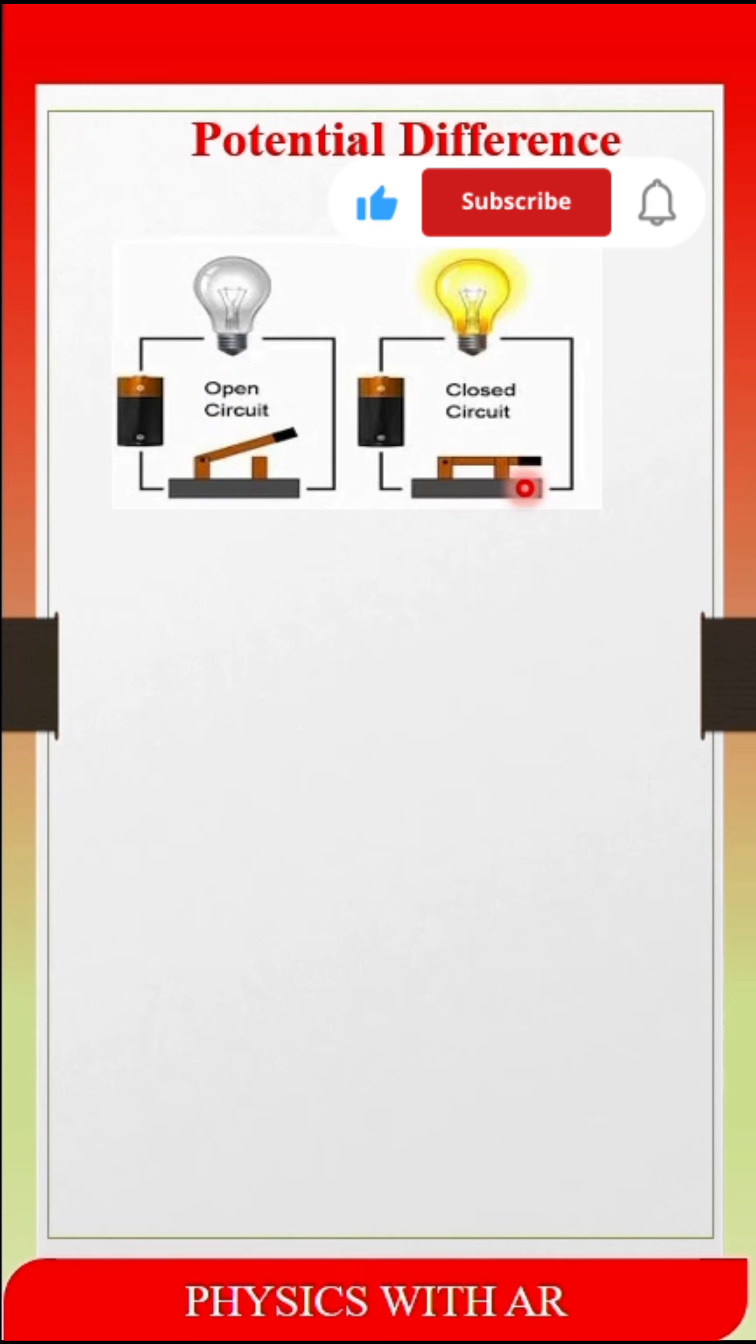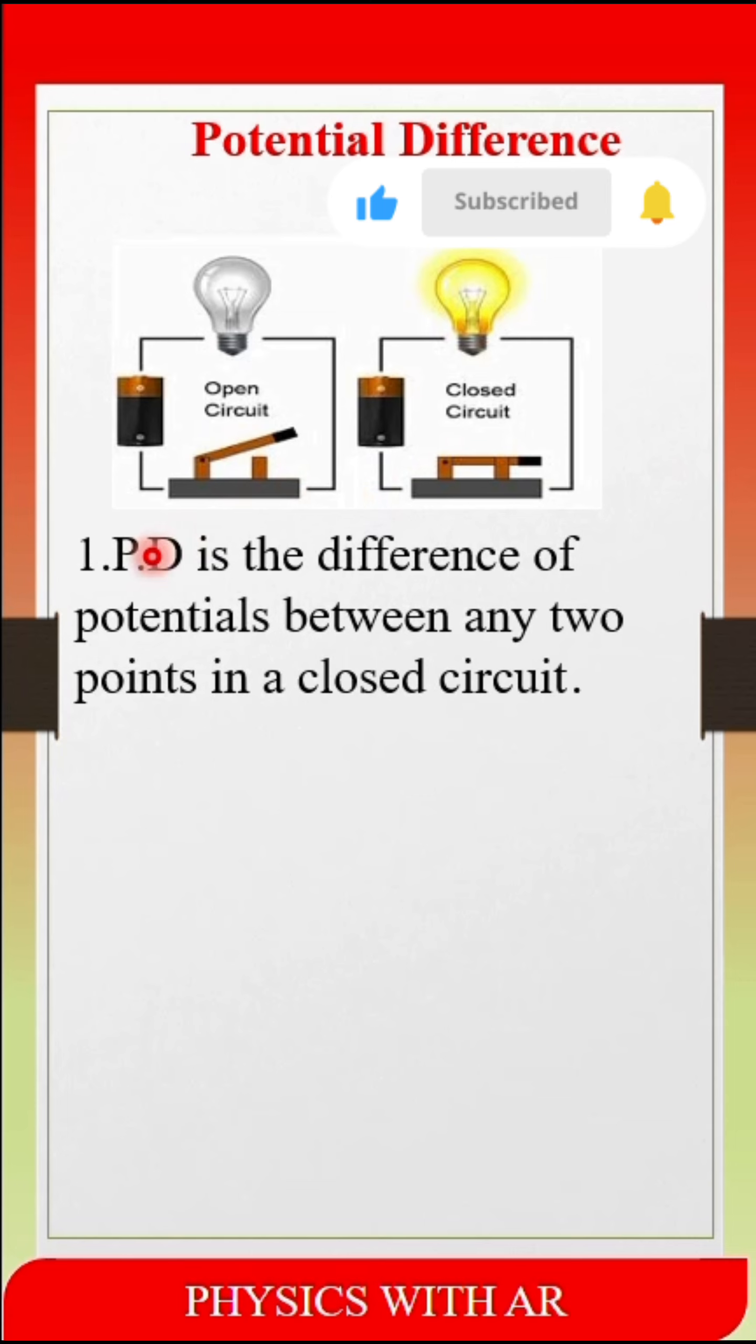Now, potential difference which you are going to measure in case of a closed circuit, that means the key which you are going to close. So how we can define this? The short form for potential difference we can use as PD.